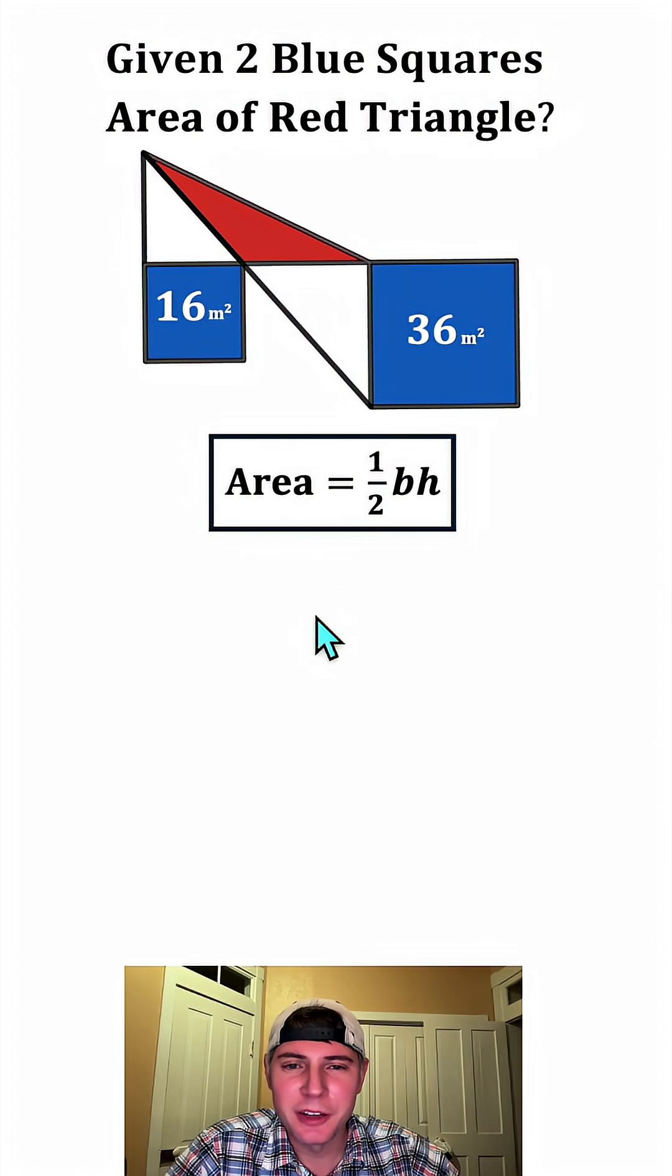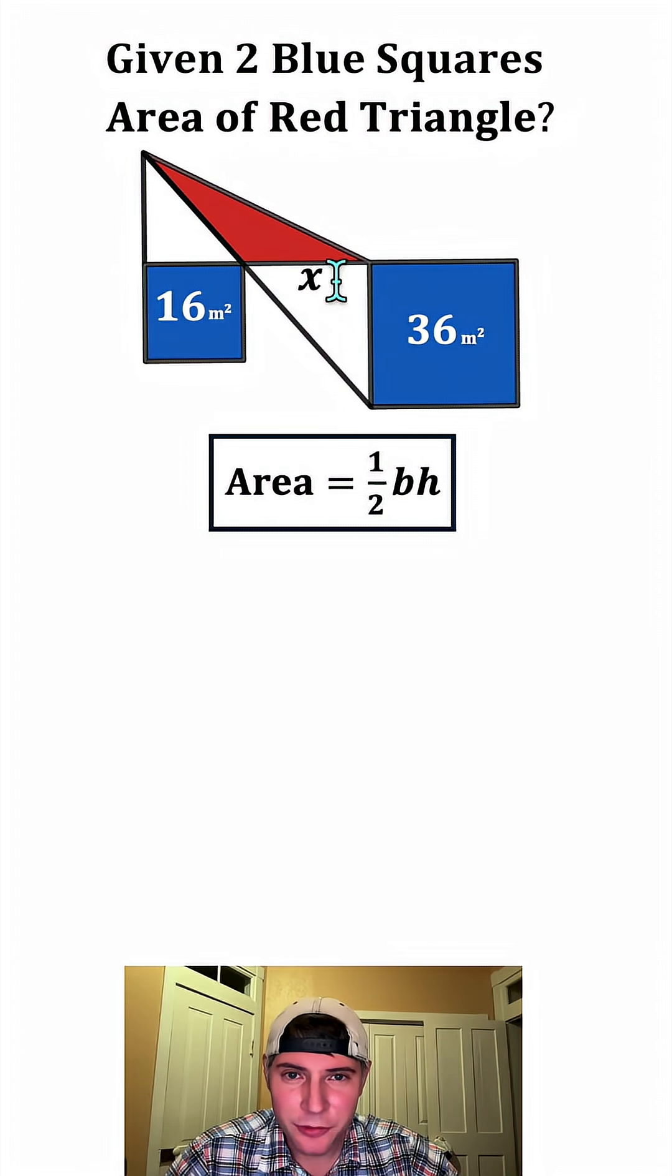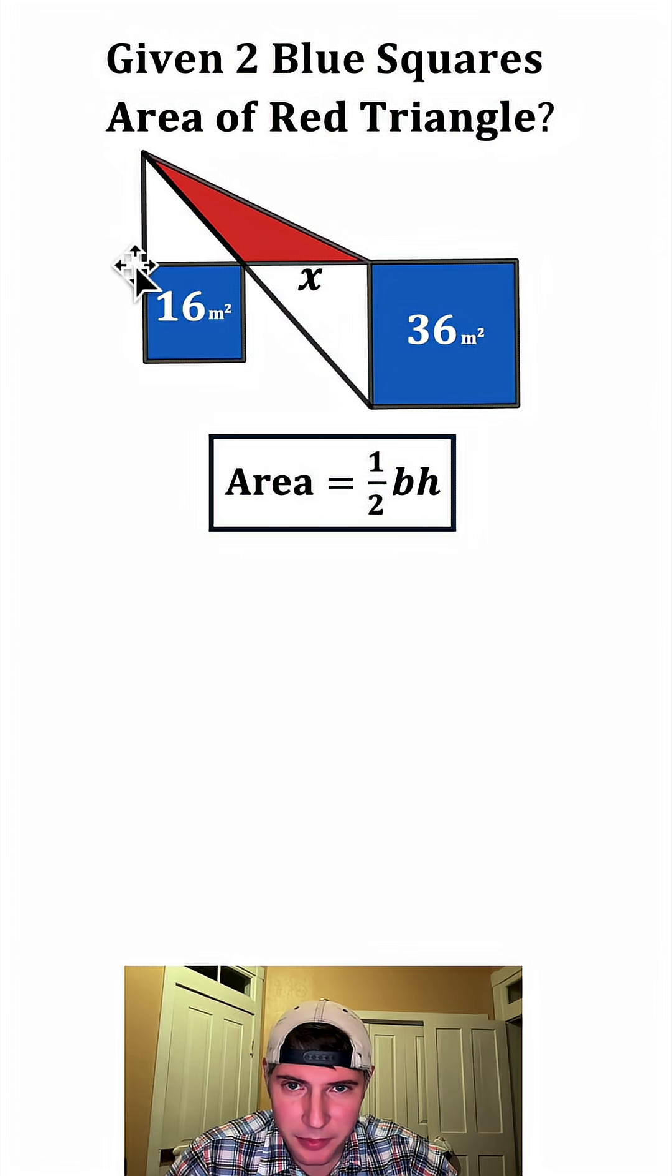So first, let's look at the formula for the area of a triangle. Area equals one half base times height. Looking at this triangle, we don't know the base, so let's call it x. And then for the height of this triangle, we need something at right angles.